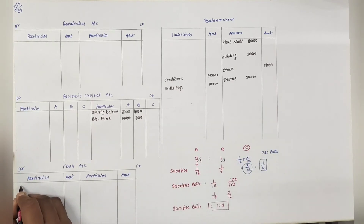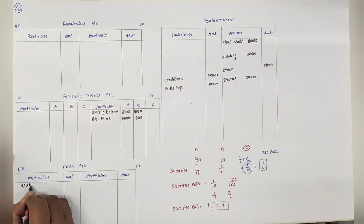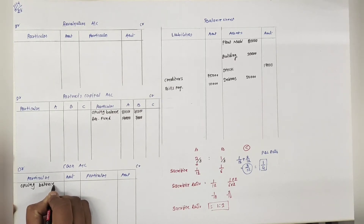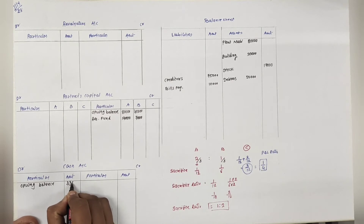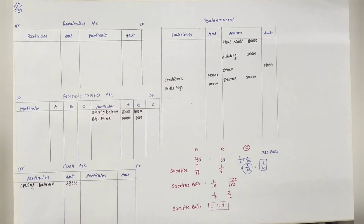Cash and bank - यहाँ पे cash में opening balance debit side. Amount is 33,000. यह था balance sheet.